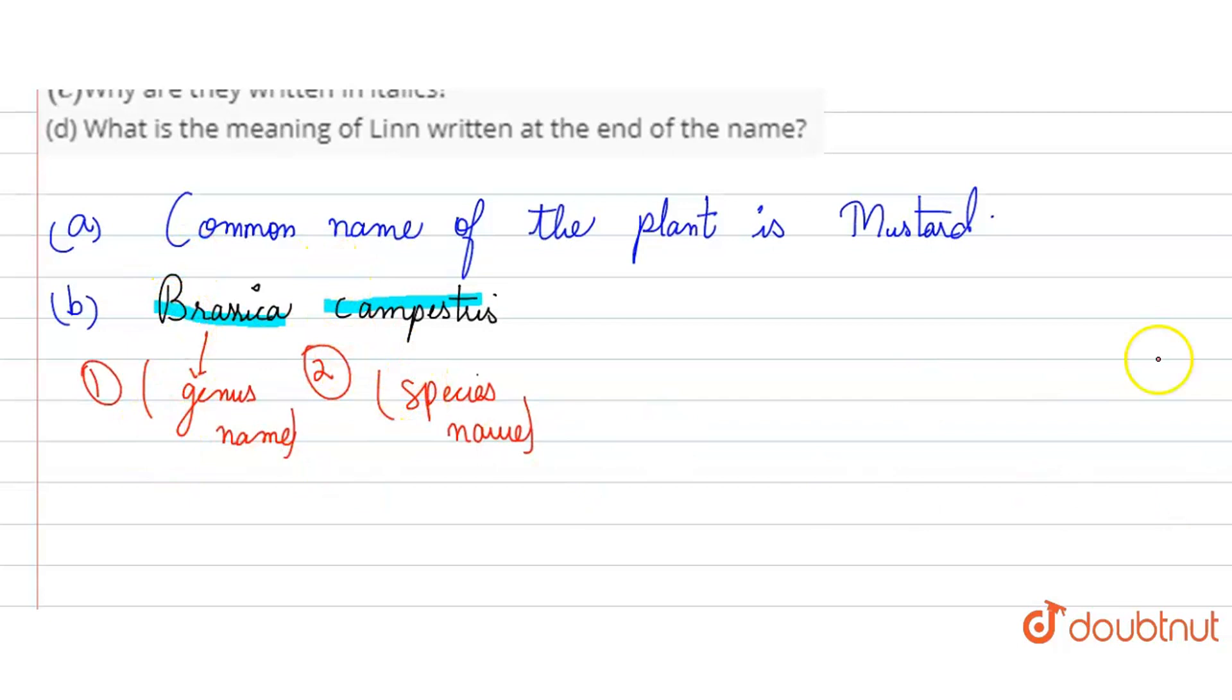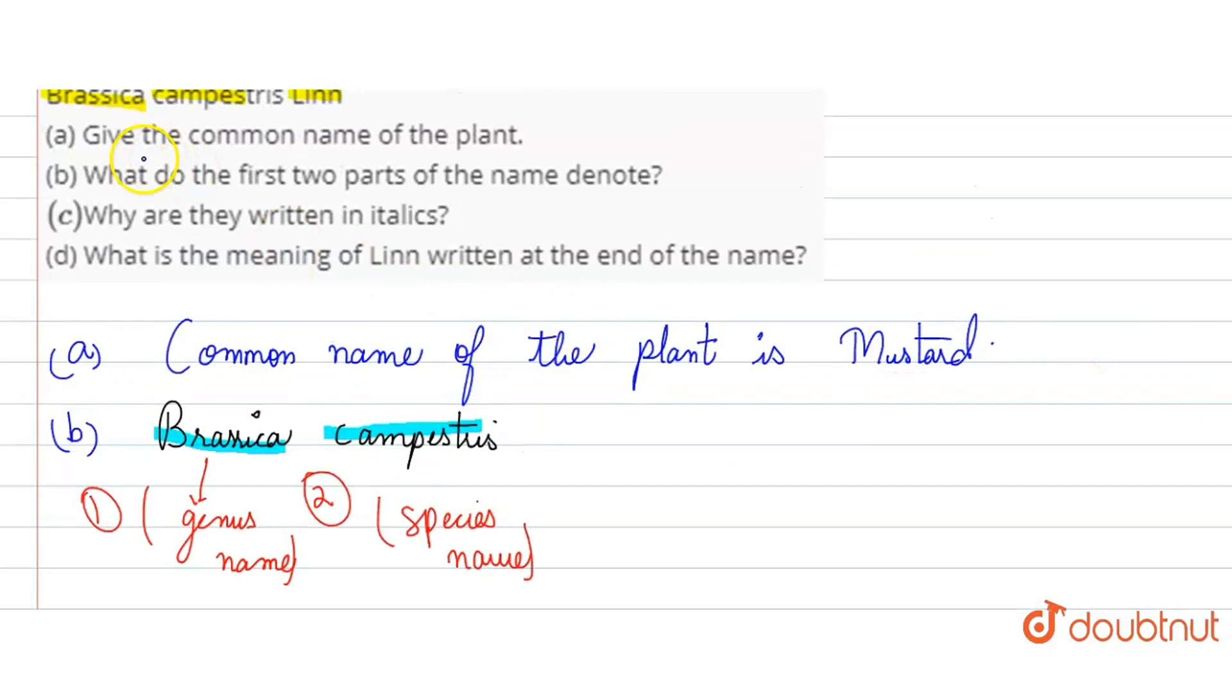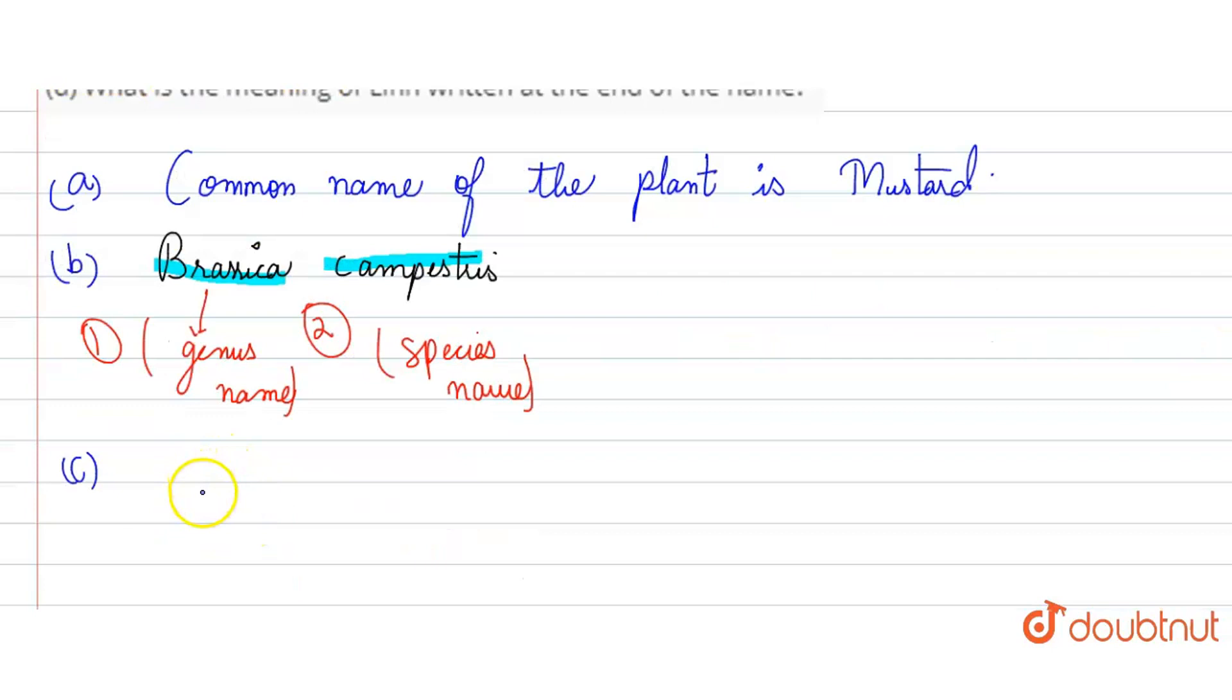In the next part we have asked, we have seen C part. We have asked why they are written in italics. So guys, according to the International Code of Botanical Nomenclature, according to ICBN.